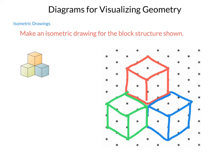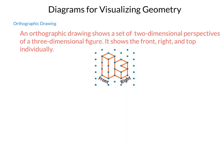So we have nets, and we have isometric drawings. Next up, there's going to be what's called an orthographic. An orthographic drawing shows a set of two-dimensional perspectives of a three-dimensional figure. It shows the front, right, and top perspectives individually.